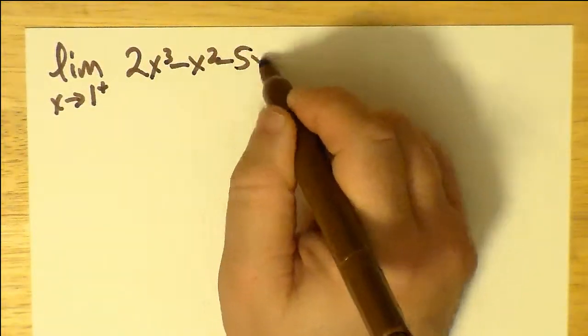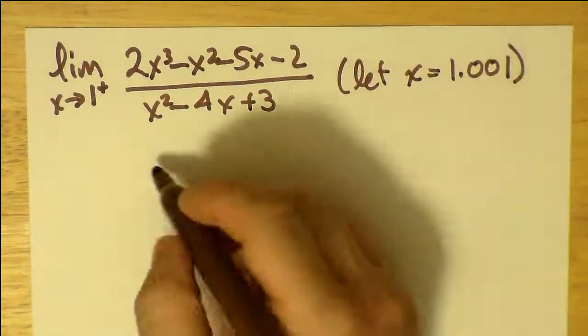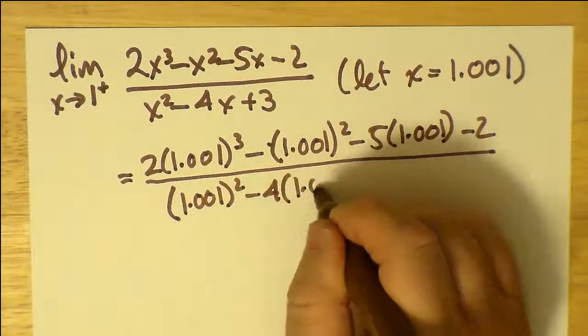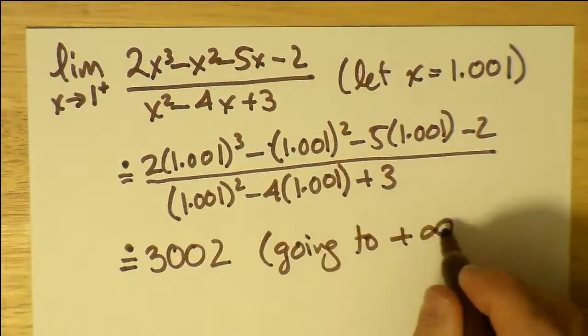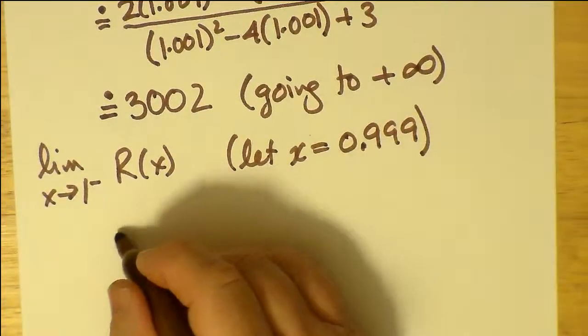So if we now take x approaches one from the right, we just plug in 1.001 and then do our little calculation. We find out that we're going to positive infinity as x approaches one from the right, and negative infinity as x approaches one from the left.